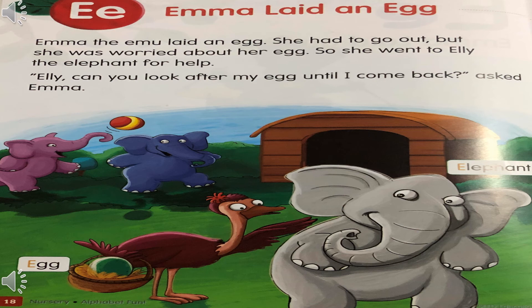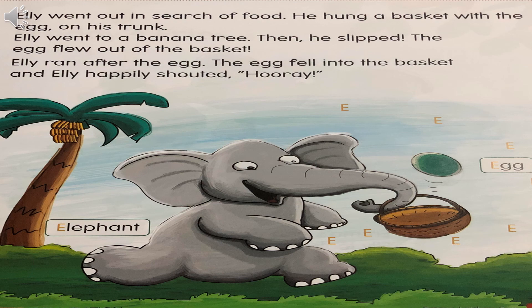Emma laid an egg. Emma, the emu, laid an egg. She had to go out, but she was worried about her egg. So she went to Ellie, the elephant, for help. Ellie, can you look after my egg until I come back? asked Emma. Ellie went out in search of food. He hung a basket with the egg on his trunk. Ellie went to a banana tree, then he slipped. The egg flew out of the basket. Ellie ran after the egg. The egg fell back into the basket, and Ellie happily shouted, Hooray!